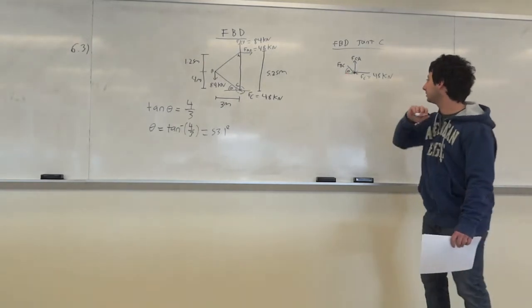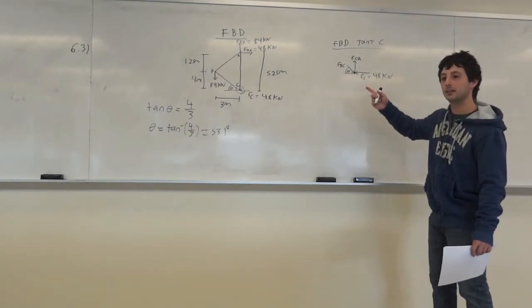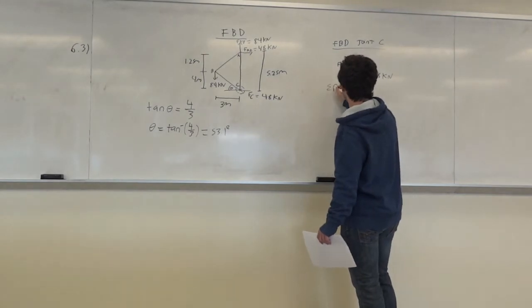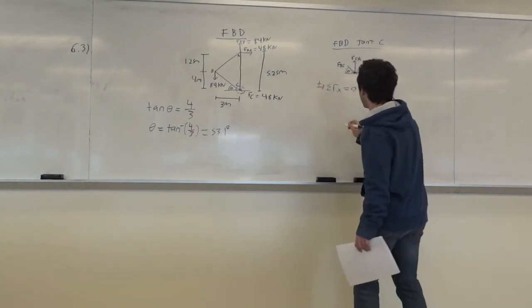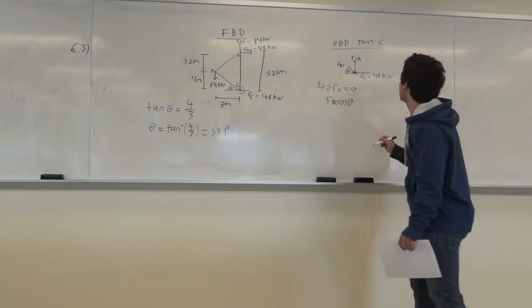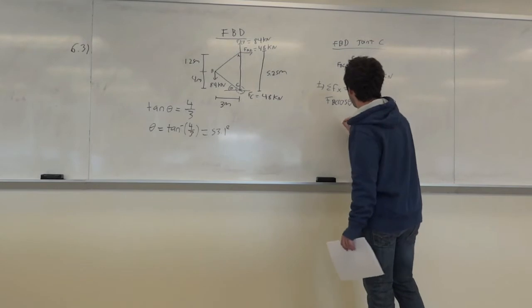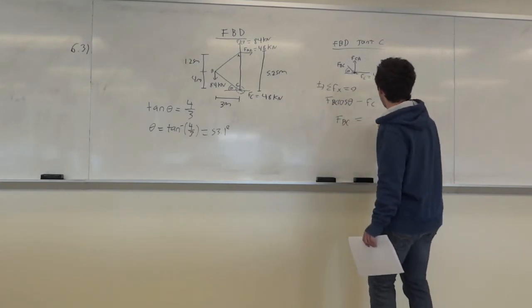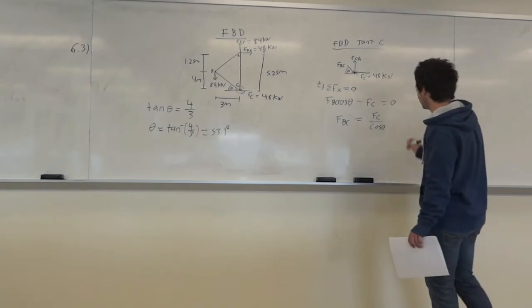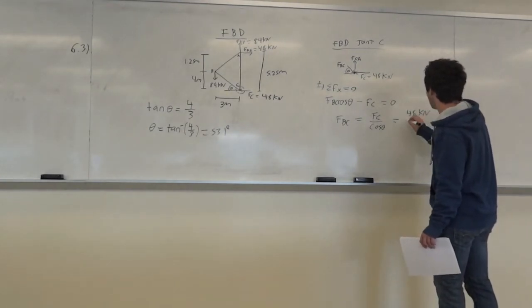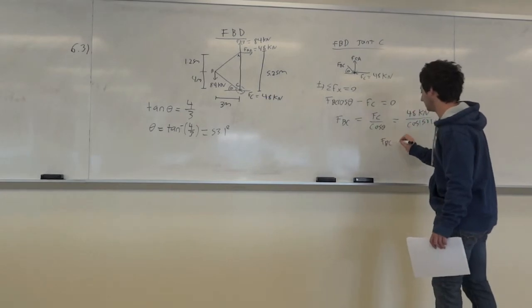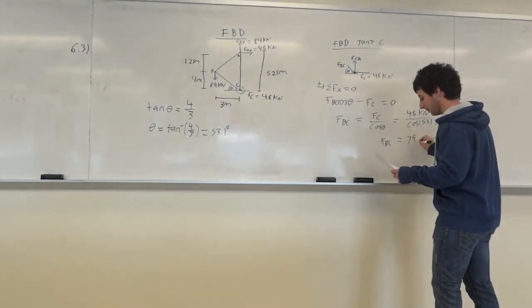To solve for F_BC, we sum forces in the X direction to be zero, taking right as positive: F_BC × cos(theta) − F_C = 0. So F_BC = F_C / cos(theta) = 48 / cos(53.1°) = 79.9 kilonewtons.